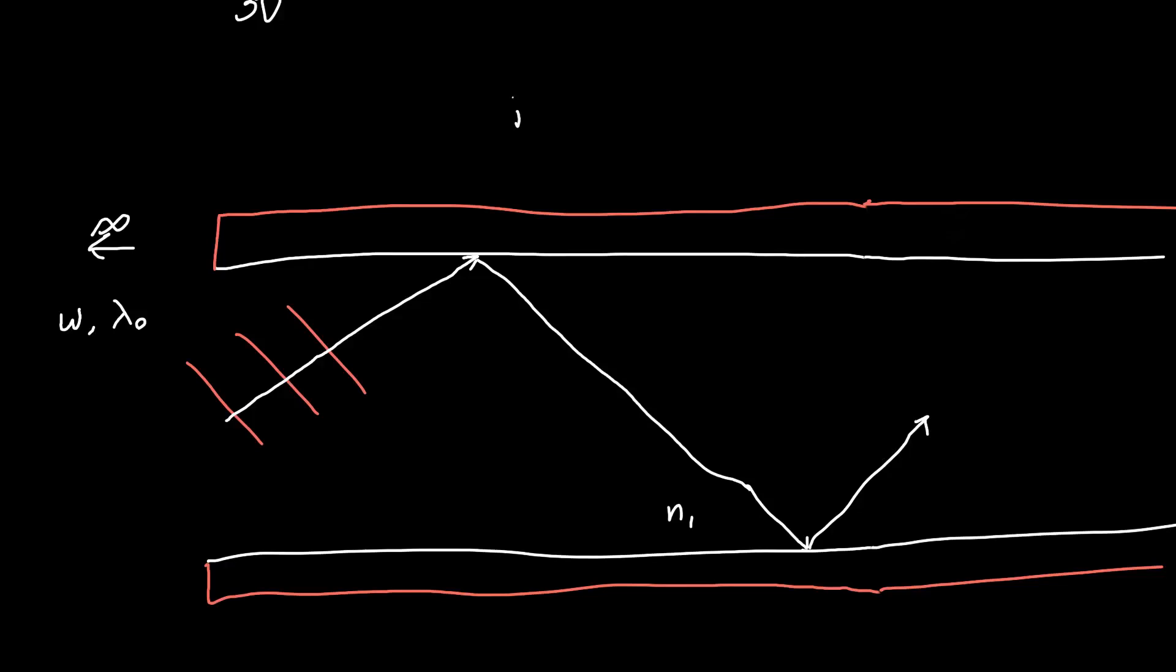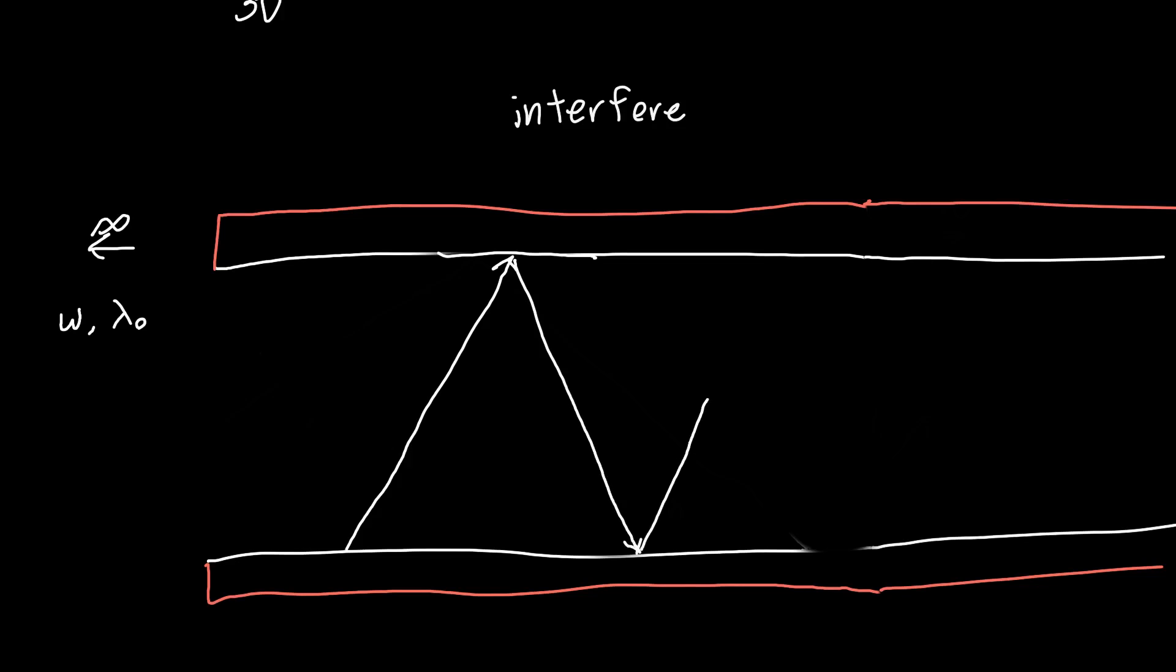As you might be able to guess, this wave can interfere with itself. These phase fronts here might interfere with the phase fronts from a second bounce over here. Let me draw this at a more aggressive angle to make it clearer how this process happens. We've got one wave, and it starts out like this, bounces off of the first interface, then bounces off the interface a second time. It'll keep bouncing and keep going on forever down the waveguide.